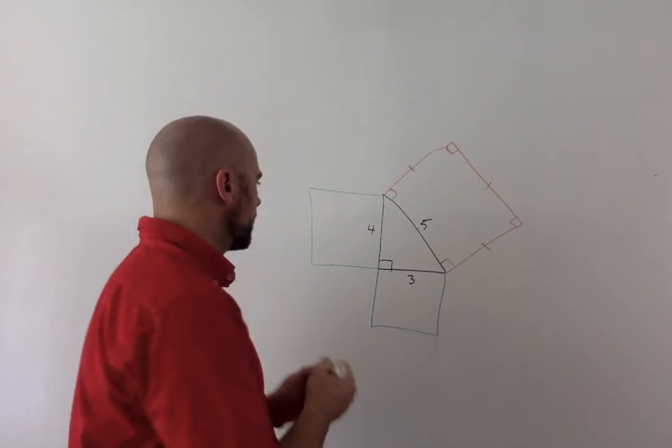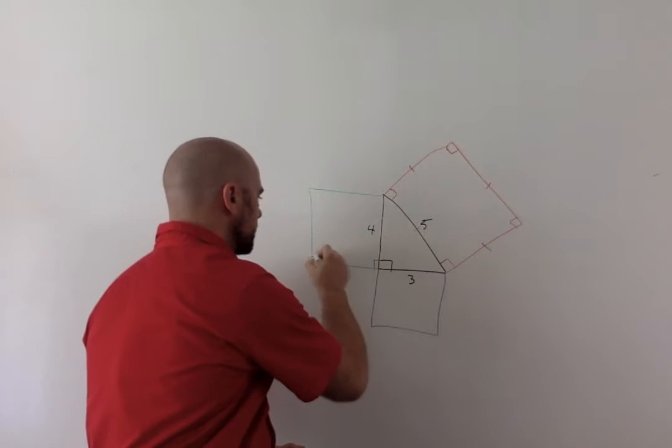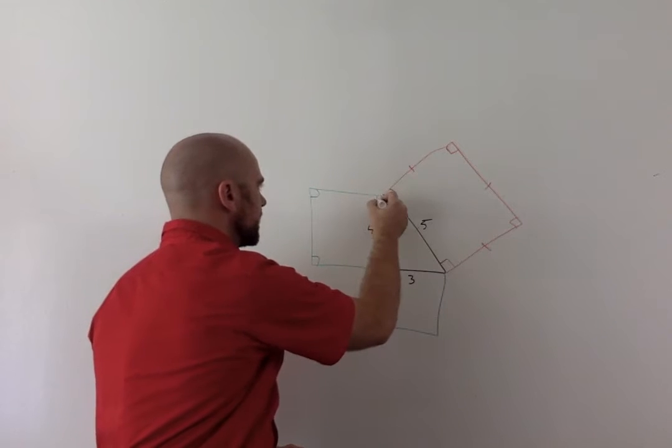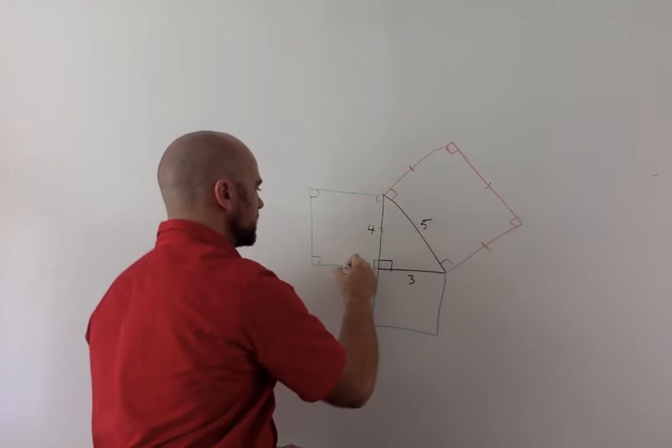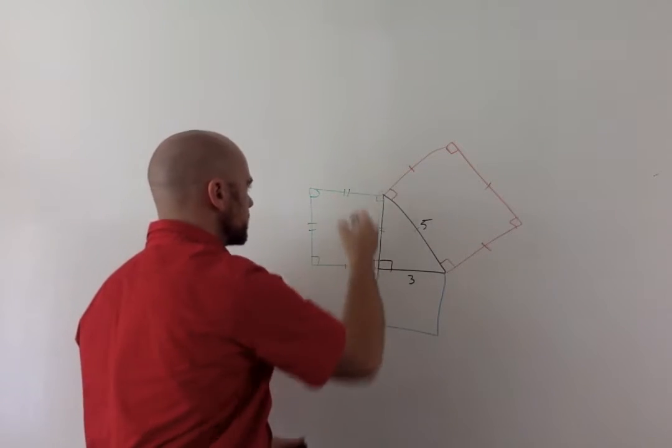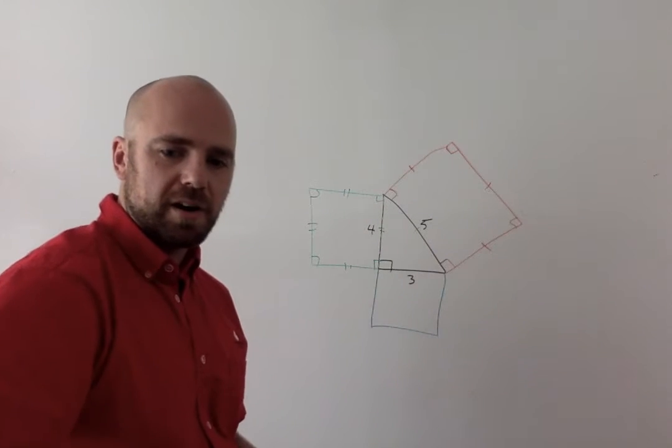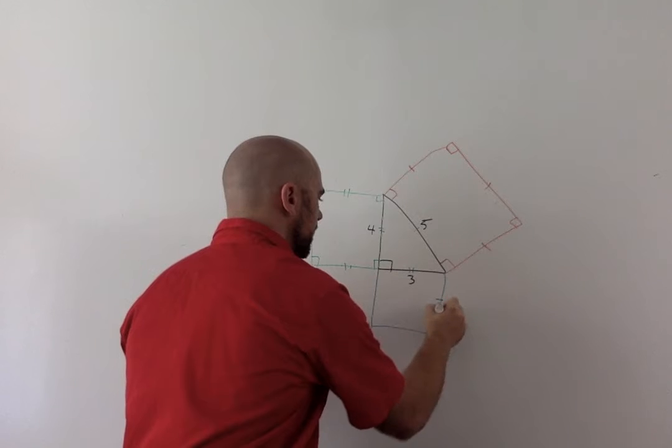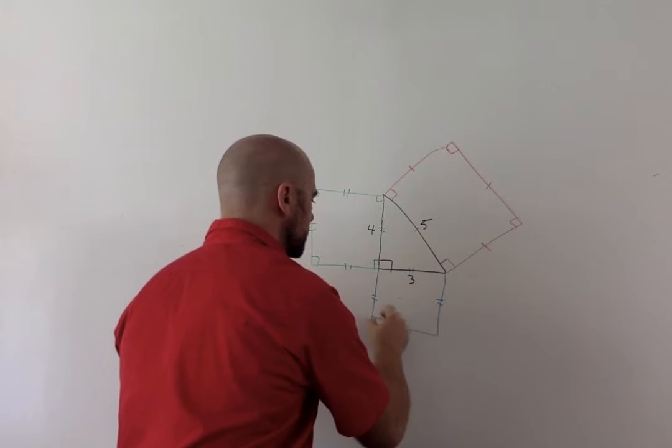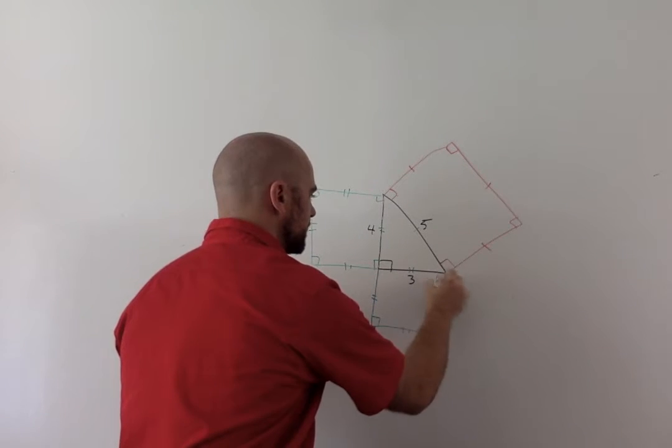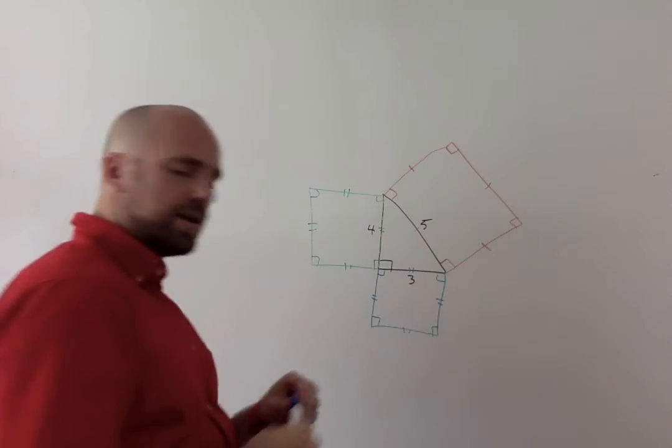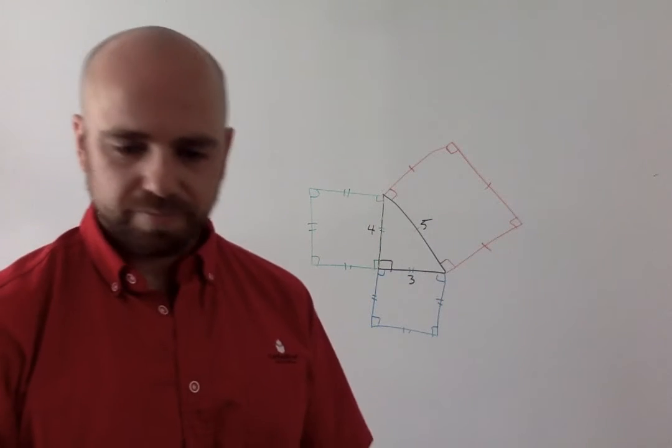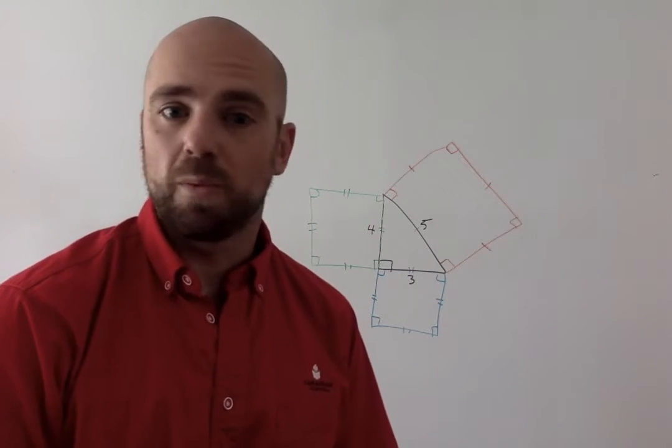If we go to our 4, we can say the same thing. These are all 90-degree angles. This distance is the same as this one, which is the same. And for our smallest one, we can say all these side lengths are the same with 90-degree angles. We know that they're all true squares, which is perfect, because that's what we want.